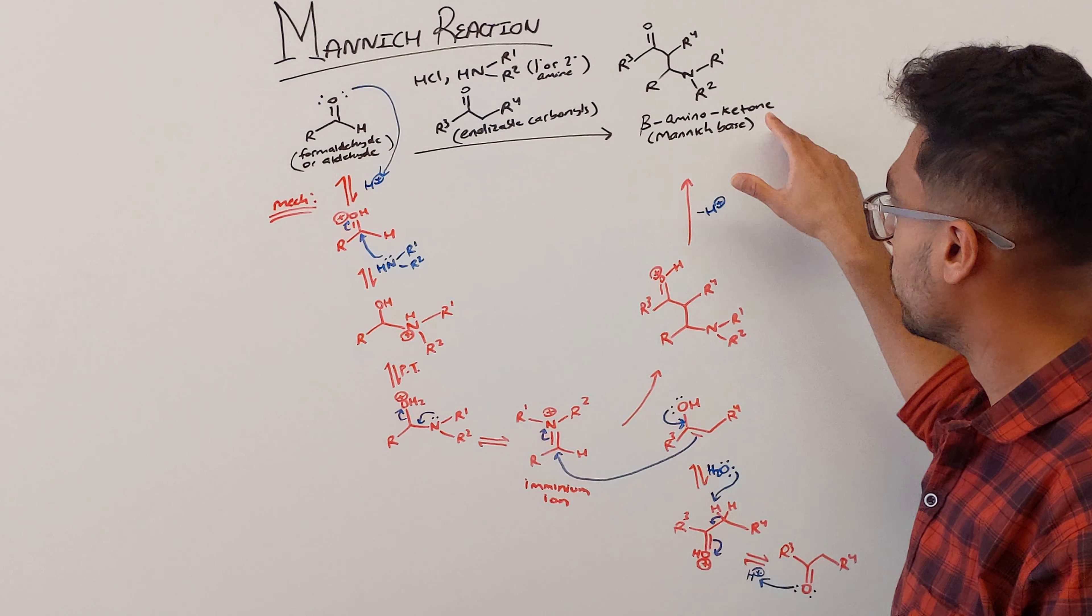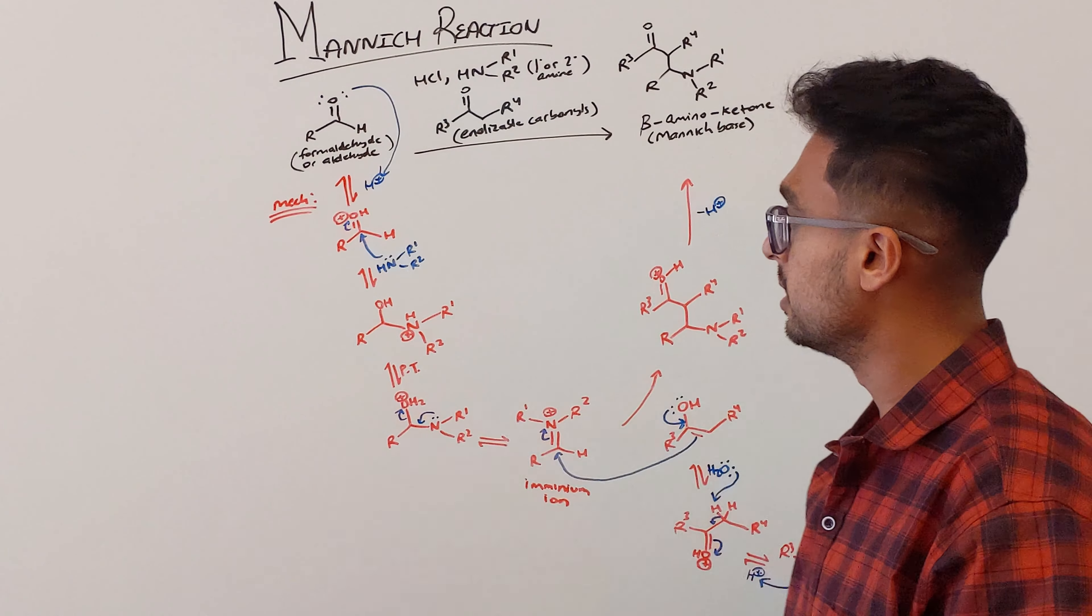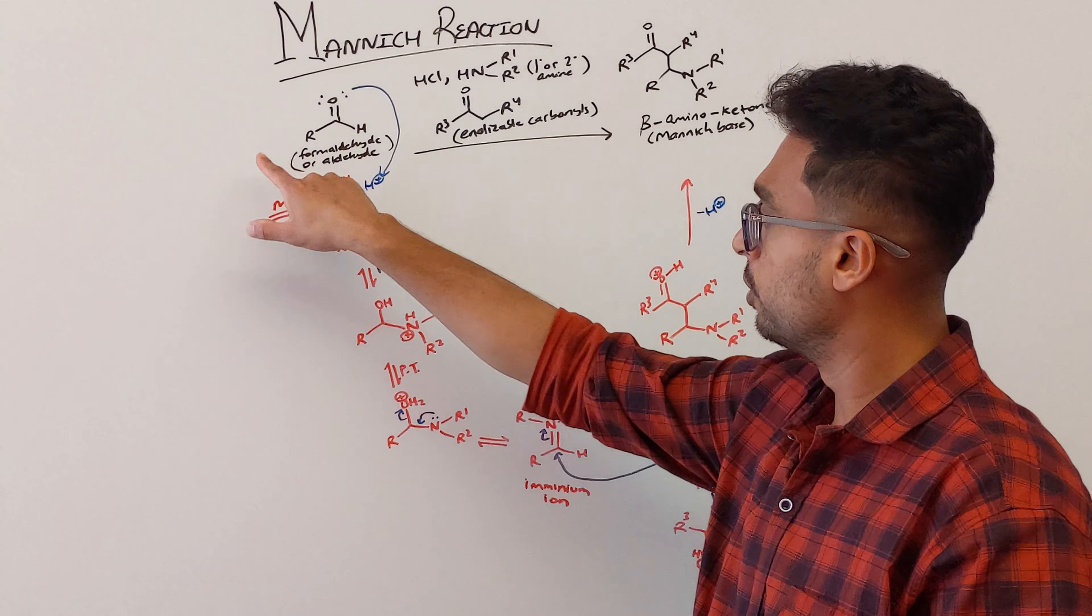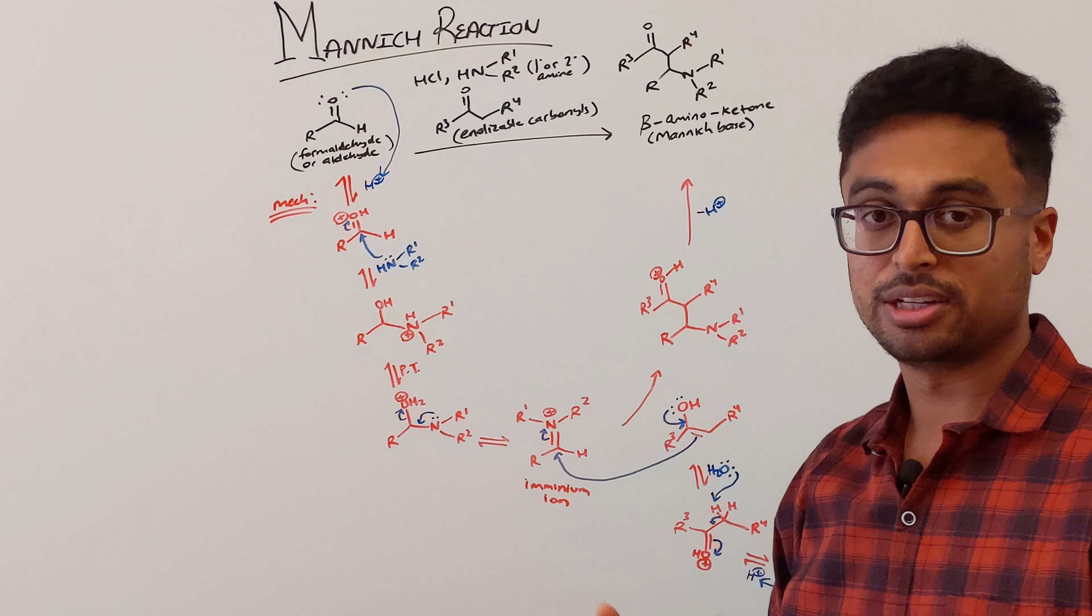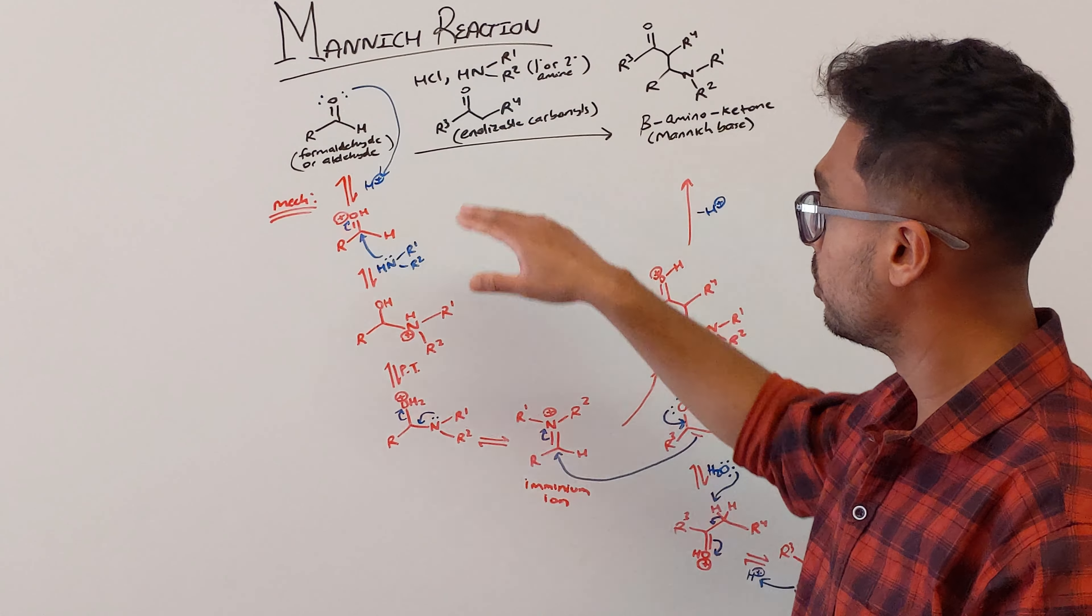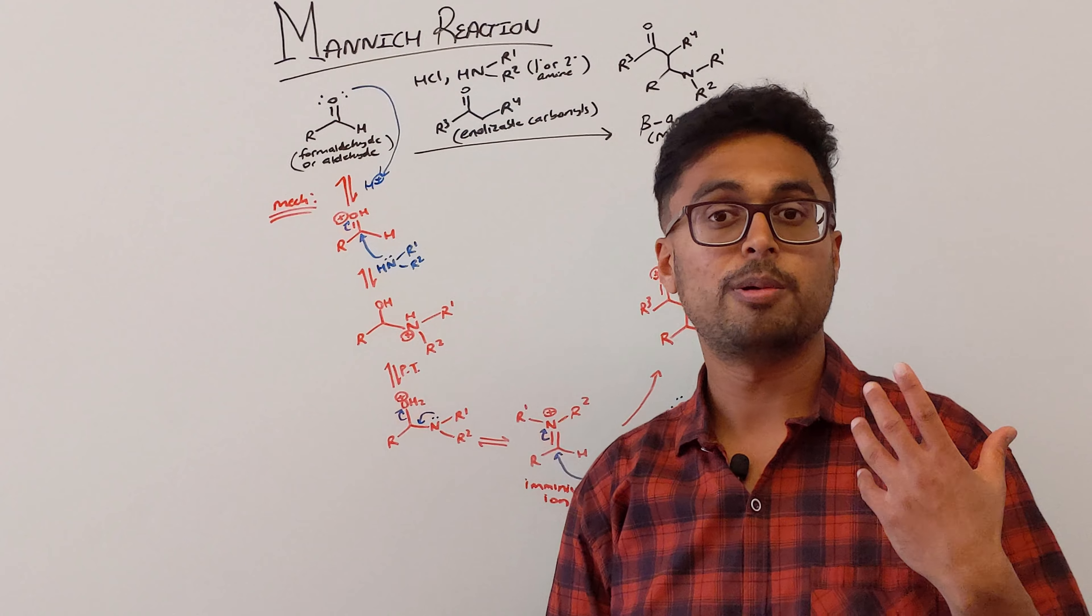In order to form this beta-aminoketone, also known as a Mannich base, we need three components. First is formaldehyde or aldehyde, second is your primary or secondary amine, and third is your enolizable carbonyls in the presence of an acid.